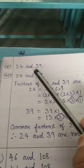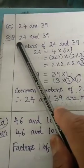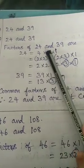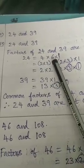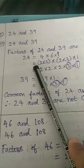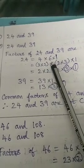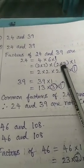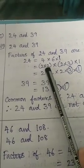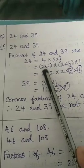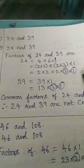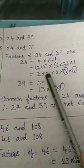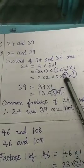Like this you have to understand and rewrite. Similarly, question C: 24 and 39. Factors of 24: 24 ones are 24. 24 is written as 4 × 6 × 1. Then 4 is written as 2 × 2, and 6 is written as 2 × 3. So factors of 24 are 2 × 2 × 2 × 3 × 1. These are the factors of 24.